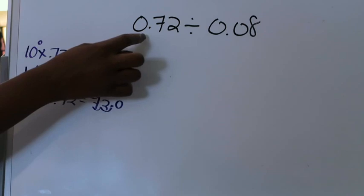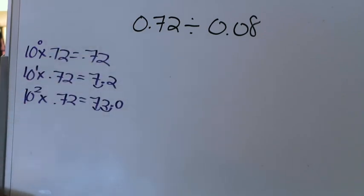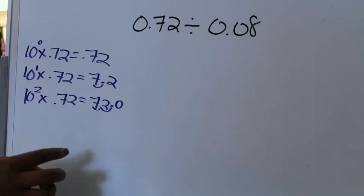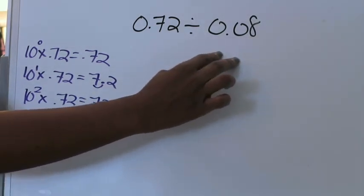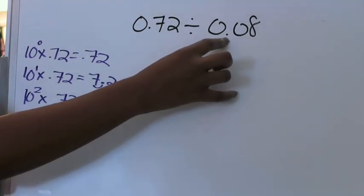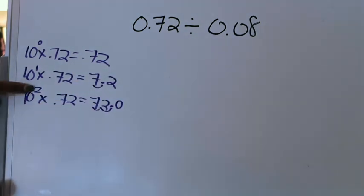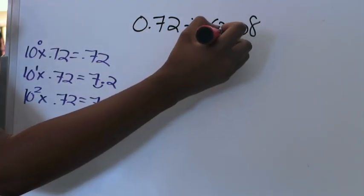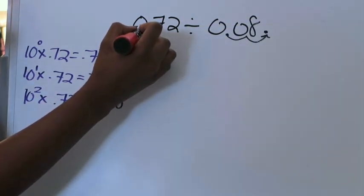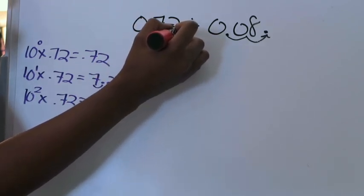Now if I multiplied my dividend by the second power of 10, that means I need to do the same thing for my divisor so that my quotient is not altered from what it would have been had I just left my division problem as written. Because I'm familiar with my powers of 10, I should recognize that if I'm going to multiply 8 hundredths by the second power of 10, the exponent tells you how many times to move that decimal point to the right. So I'm going to move it one, two — and my decimal point will be placed there.